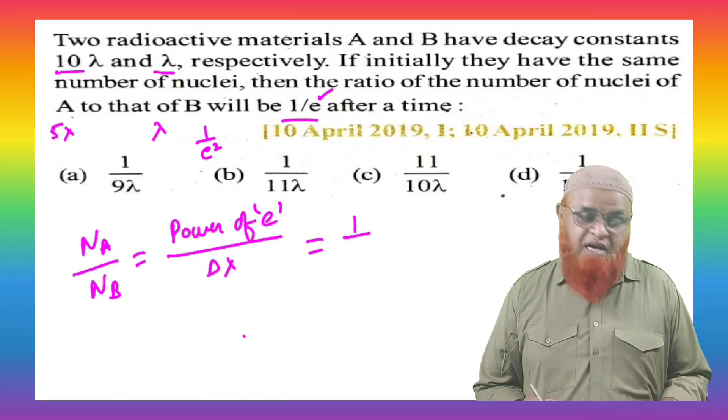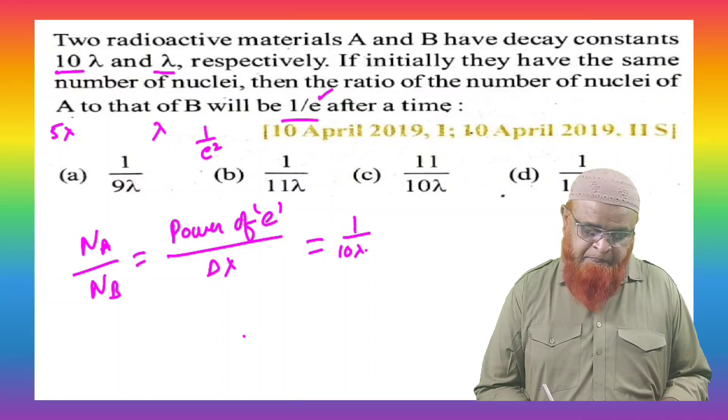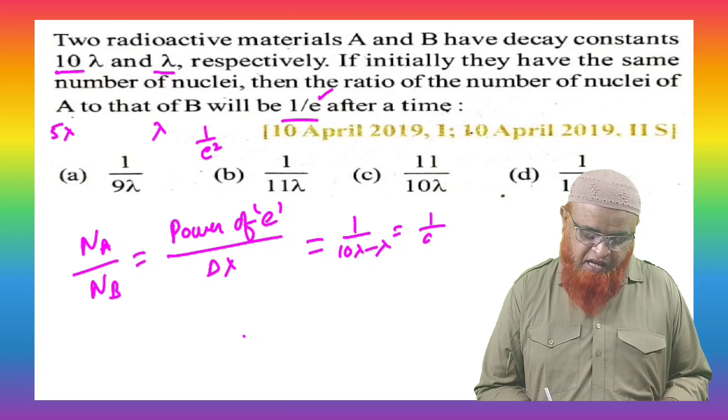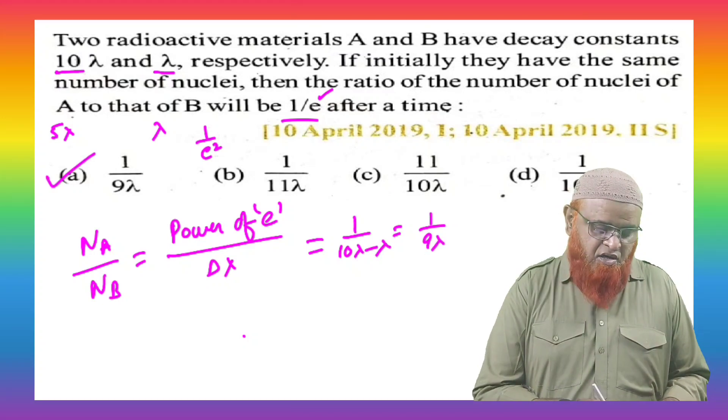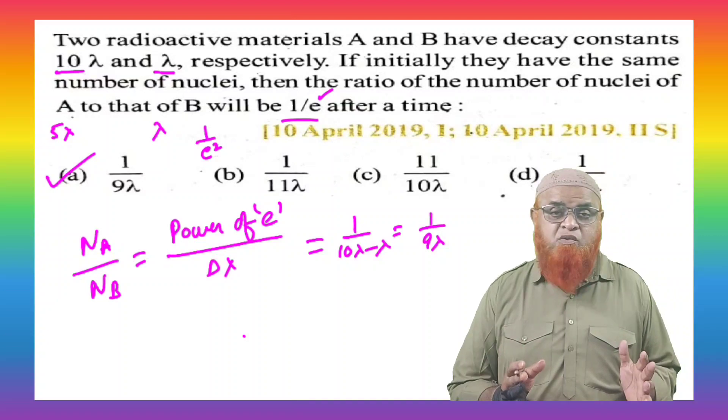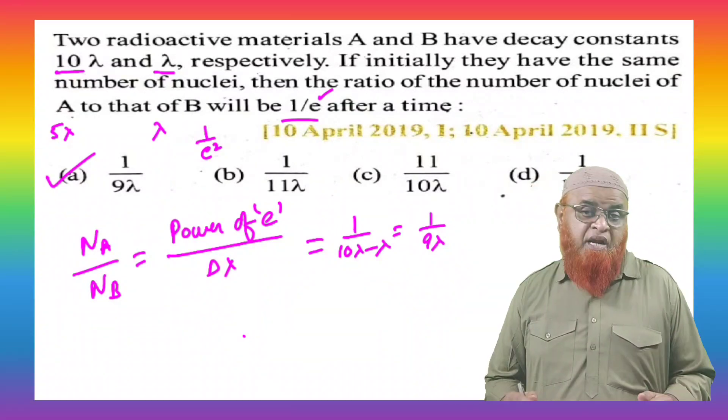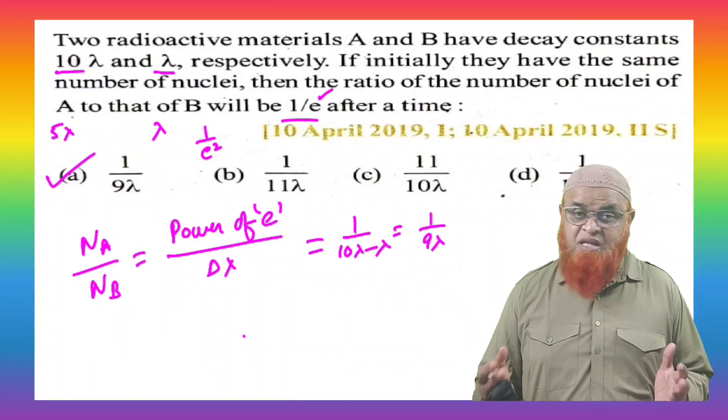And delta lambda means it is given as 10 lambda and lambda. So you can write it as 10 lambda minus lambda is equal to 1 by 9 lambda. That's it. This is the shortcut method. Otherwise, if you don't use this shortcut, it will waste 1 minute, maybe sometimes more than 1 minute.